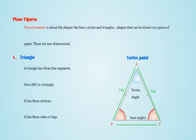1. Triangle: A triangle has three line segments. Here ABC is a triangle. It has three vertices and three sides or legs.